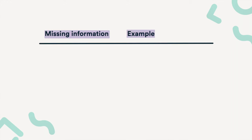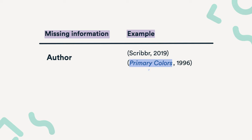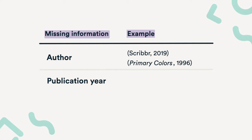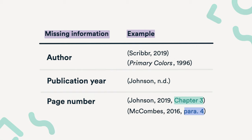Sometimes you just can't find all the information you need to cite a source. Luckily, there are some guidelines for this. If the author is unknown but you know the organization that created it — for example, Scribbr — then you should use the organization name. If you don't know that either, then use the title, formatted the same way as in the reference list, so either in italics or in double quotation marks. You might also come across sources without a publication year; in that case, use 'n.d.' for no date. If your source doesn't have page numbers, include a chapter or paragraph number instead.